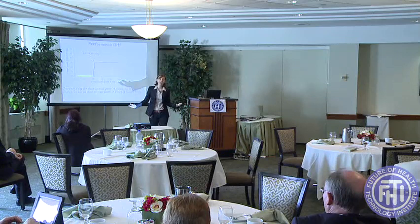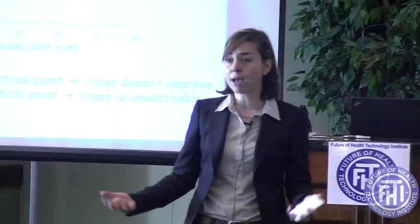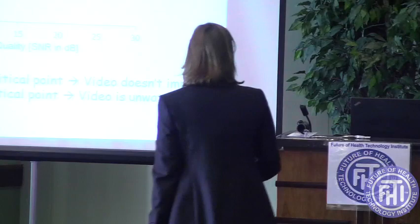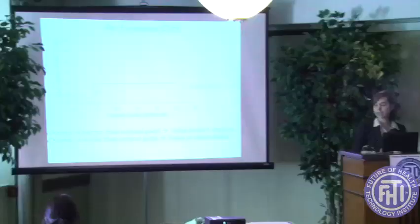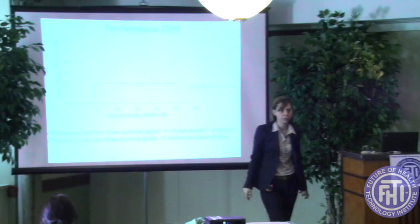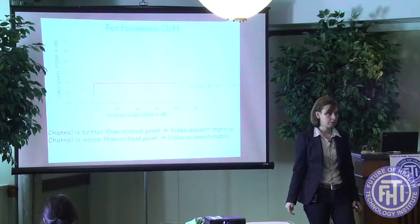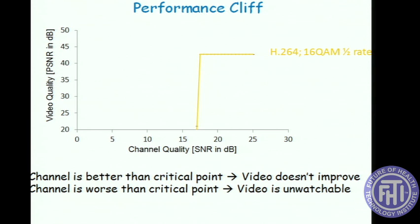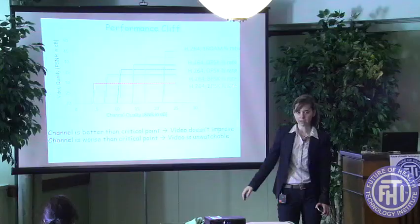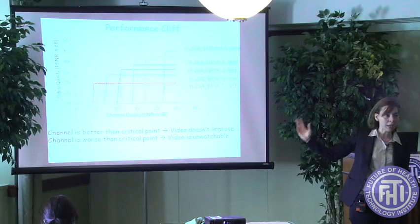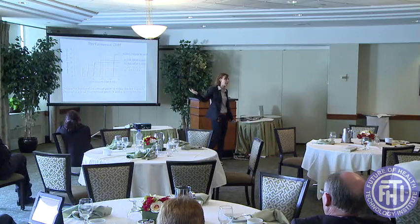Some of you may say you can change the modulation, the coding, the video coding, or add error correcting codes — all of that helps. But all you are going to get is a different cliff point. For example, a different modulation and code rate with a state-of-the-art video codec — what we call H.264 — gives a different cliff. I can draw a variety of these cliff points for all the modulation and coding that comes with your Wi-Fi. Whatever coding, modulation, and codec you pick, you get one of these cliff points. You can jump between cliffs, but that's it.